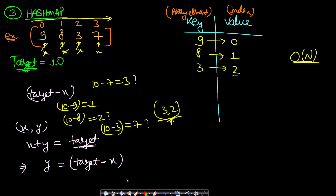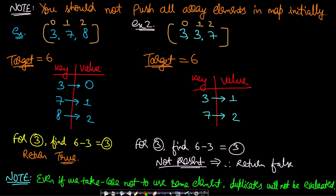There's an important trick: do not push all array elements into the map initially. For example, if the array is [3, 7, 8] with target 6, and you pre-populate the map, then when x=3 you'd search for 6−3=3 and find it already in the map, returning indices (0,0) — but that's the same element reused, which is wrong. Inserting elements one at a time as you iterate prevents this mistake.